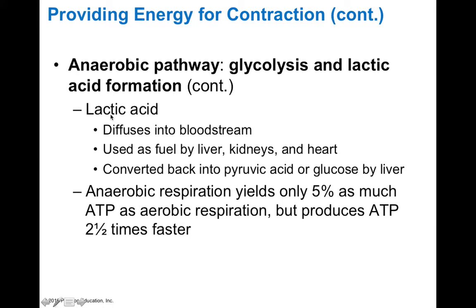While lactic acid could potentially harm muscle tissue, as long as it's transported away to the liver, kidneys, and heart, these organs can store lactate and convert it back into pyruvic acid or glucose for later use. Anaerobic respiration yields only about 5% as much ATP per glucose as aerobic respiration. However, it produces ATP much more rapidly — about two and a half times faster.